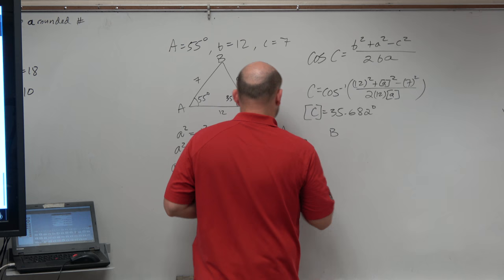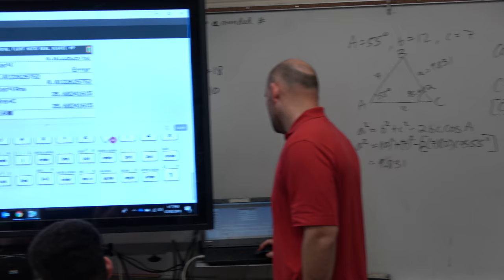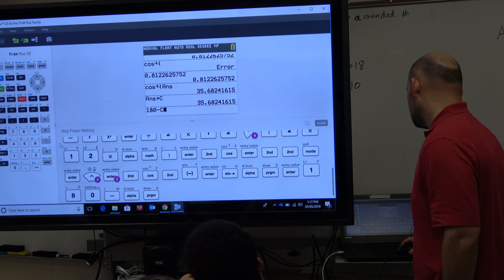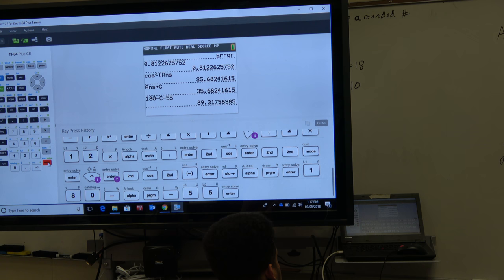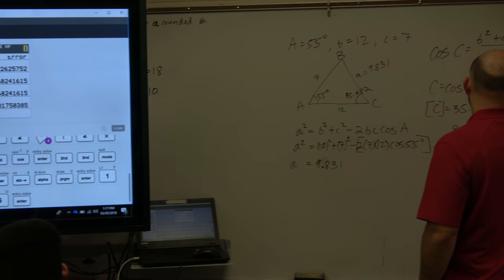So I'll just do 180 minus, oh, did I store C? Yeah, I did. Alpha C minus my a, which is 55 degrees, and I get 89.31, and let's round that to 8. All right, so B equals 89.316.